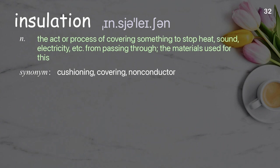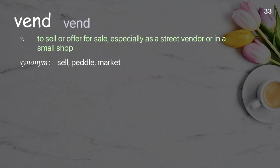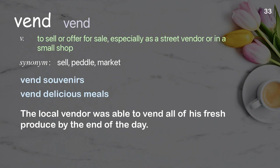Insulation: the act or process of covering something to stop heat, sound, electricity, etc. from passing through; the materials used for this. Examples: additional sound insulation, insulation board. He installed fiberglass insulation in the wall. Vend: to sell or offer for sale, especially as a street vendor or in a small shop. Examples: vend souvenirs, vendors vend delicious meals. The local vendor was able to vend all of his fresh produce by the end of the day.